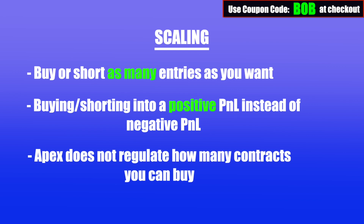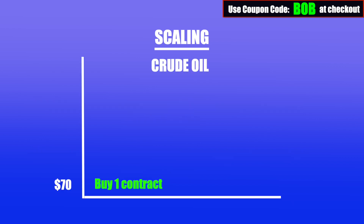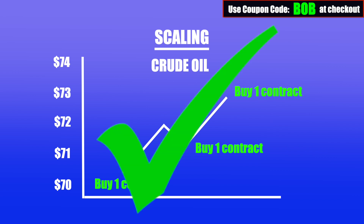Again, Apex doesn't regulate how many contracts you can buy or short when scaling — just be smart with your risk management. They don't want to see you buy 20 contracts on your first day for a big windfall and then trade micros for a small profit the rest of the time. Here's a visual example: you buy a contract to go long on crude oil at $70. Crude oil goes to $72, pulls back to $71, and feeling good about your trade, you buy another contract at $71. Crude oil continues higher to $73, you think it can reach $74, so you buy another contract. All of this is allowed because you are scaling into a positive P&L.